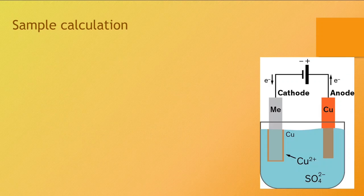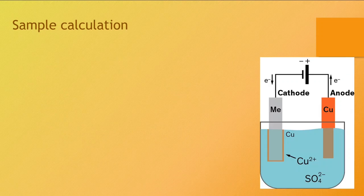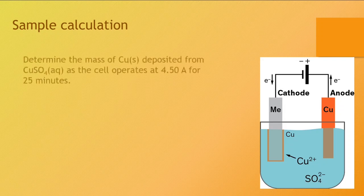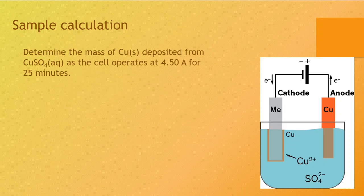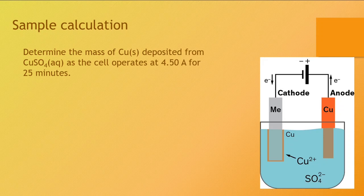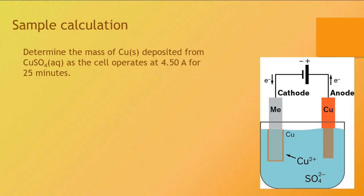So having a look at a copper electroplating cell, we're going to ask the following question. Determine the mass of copper deposited from copper sulfate as the cell operates at 4.5 amps for 25 minutes.